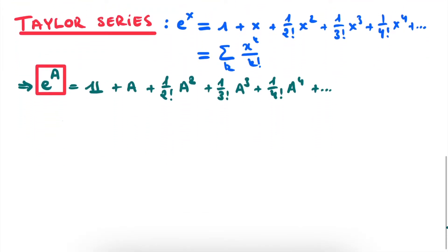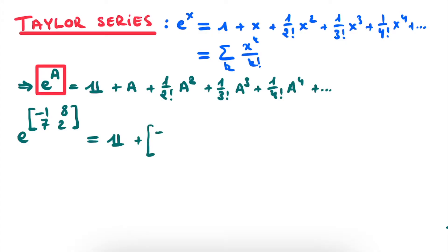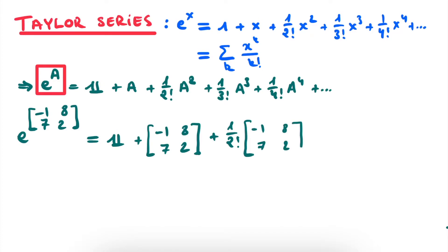So let's see how this now works out for our specific exercise. We have e to the power of the matrix minus 1, 8, 7, and 2. Now we rewrite this using the Taylor expansion. So we have the 2 by 2 unity matrix, plus A which is simply our matrix minus 1, 8, 7, and 2, plus 1 over 2 factorial — which is simply 1 over 2 — times the matrix minus 1, 8, 7, 2 to the power of 2, plus all of the other terms.